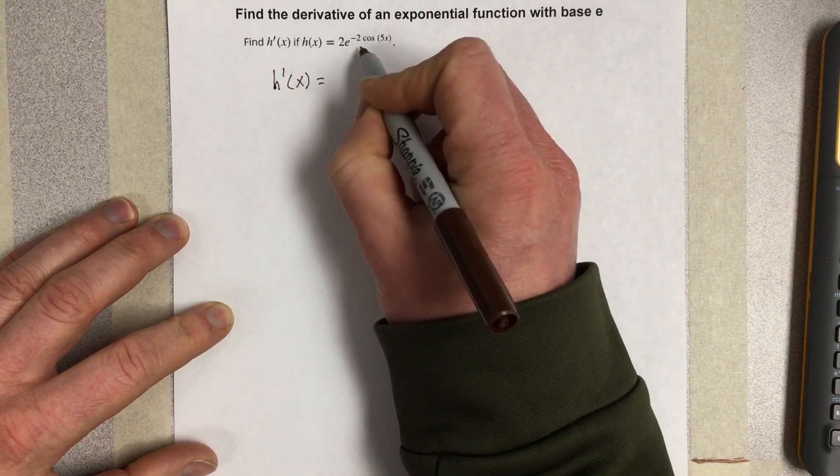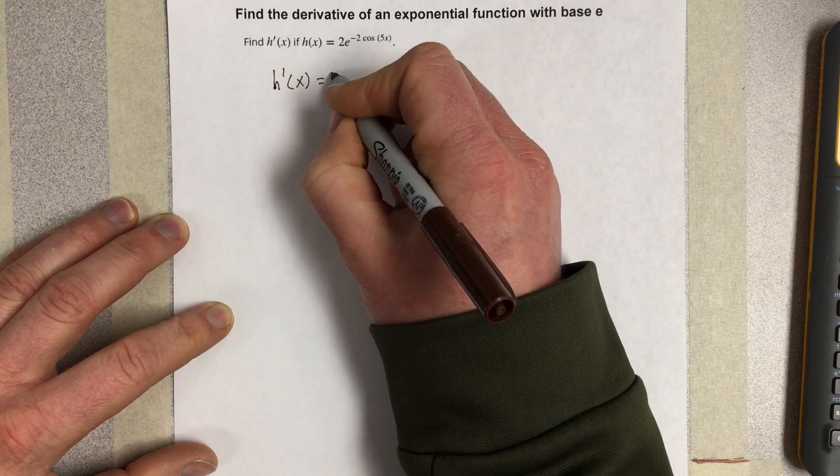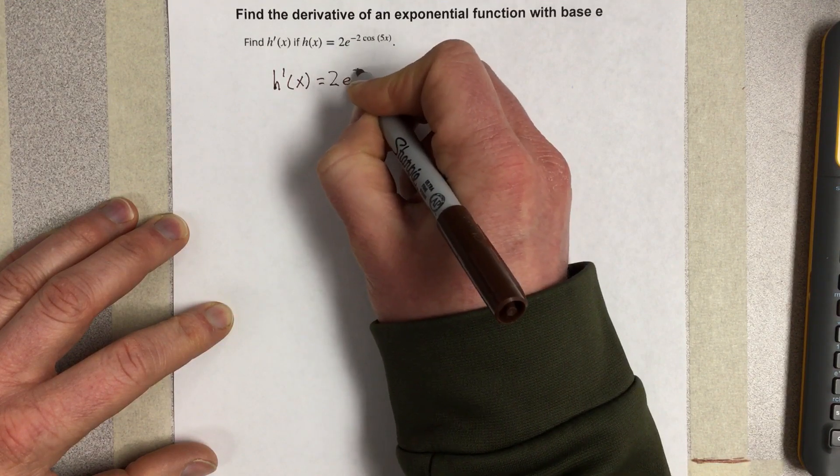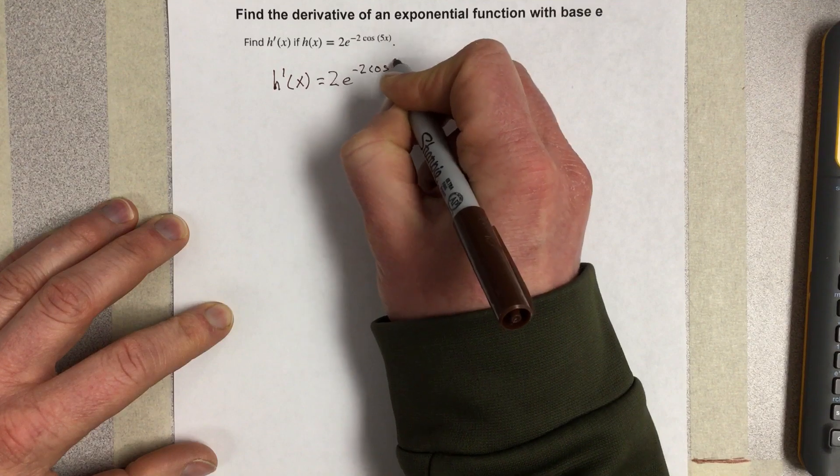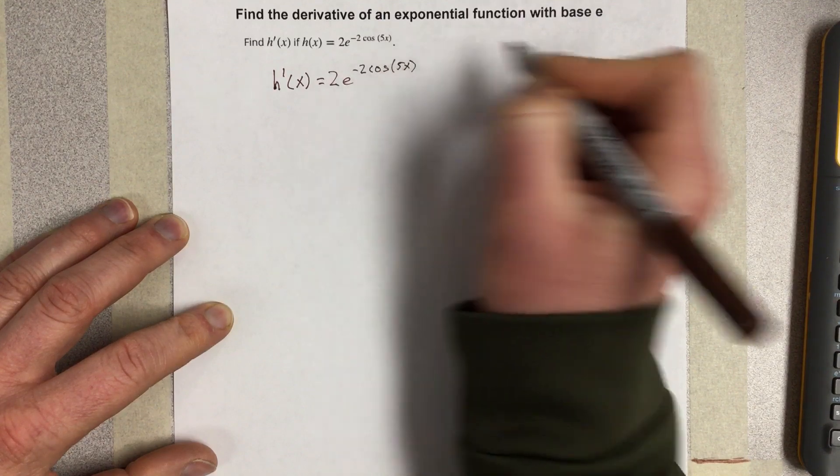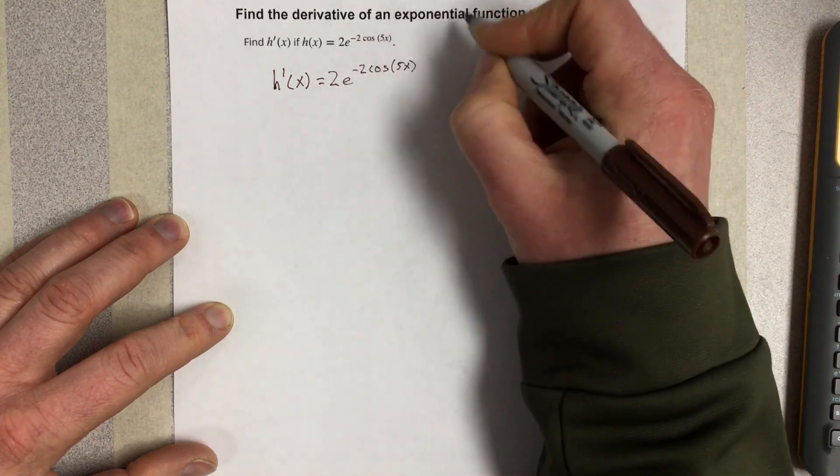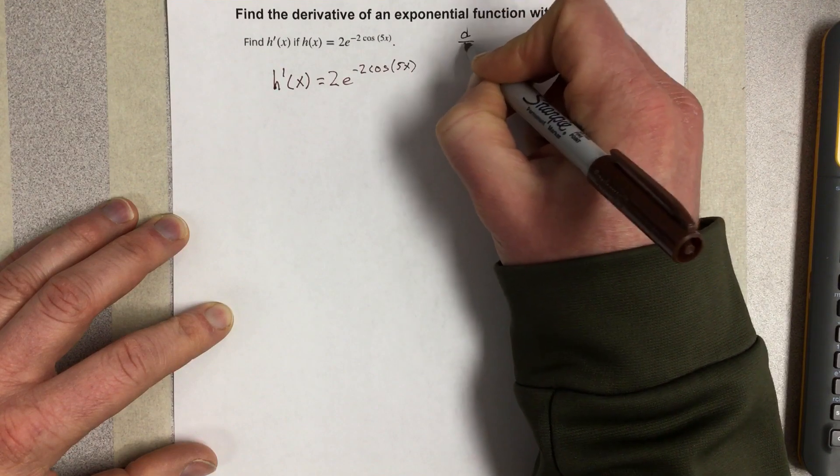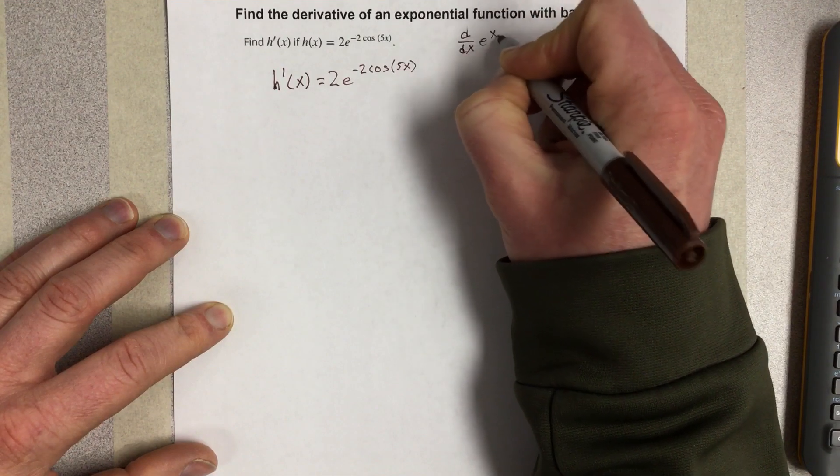If I do this chain rule, we're going to have the derivative of the outside, which would just be 2e to the negative 2 cosine of 5x. And the reason that stays the same is because the derivative of e to the x is itself.